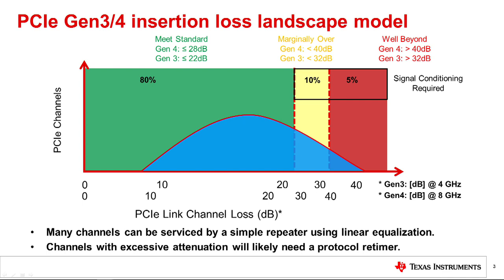The maximum channel loss in the PCIe standard has gone from a few dB in Gen 1 to over 35 dB in the upcoming Gen 5 specification. However, some channels still find the attenuation goes beyond the limits set by the PCIe specification.